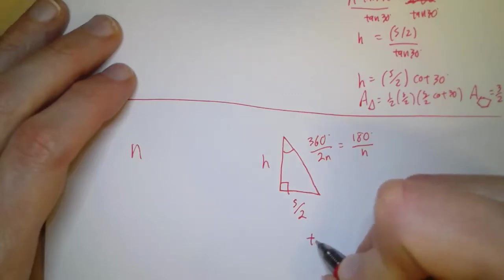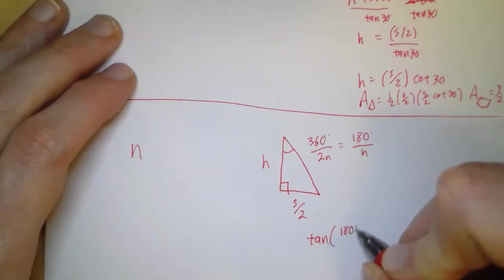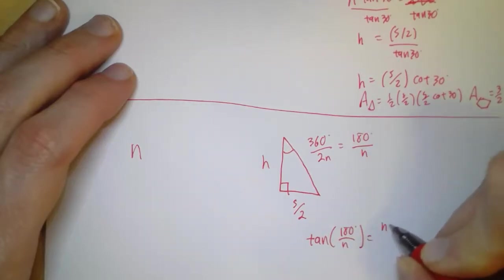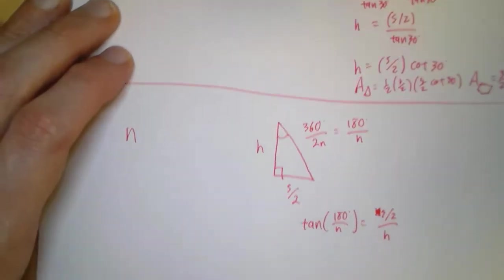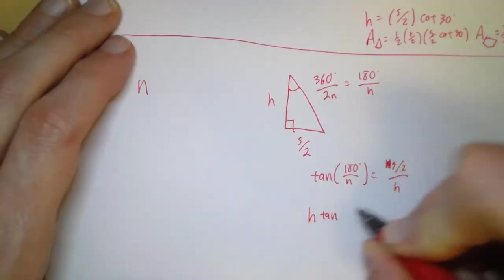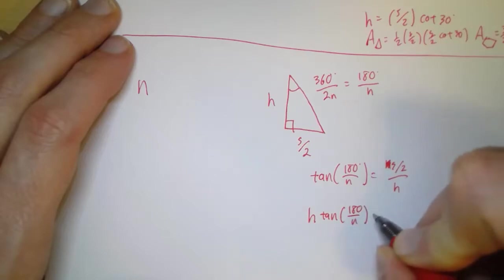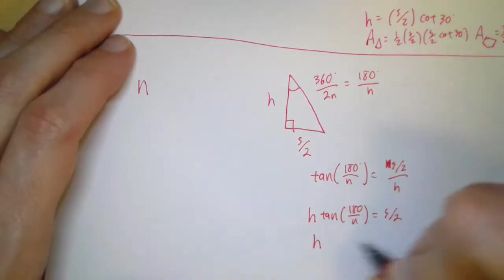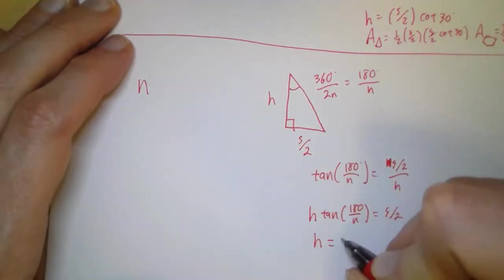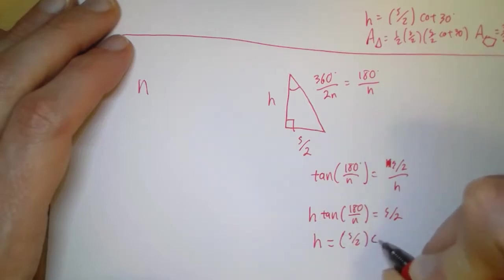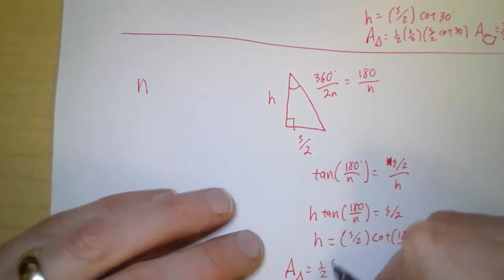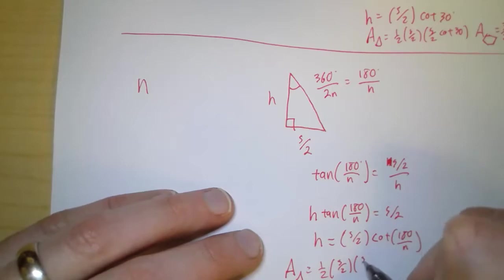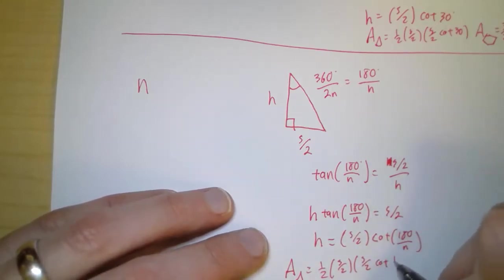So when we solve this, we write tangent of 180 degrees over n equals s over 2 all over h. Solving, we get h times tangent of 180 over n equals s over 2. Dividing by tangent is the same as multiplying by cotangent, so h equals s over 2 times cotangent of 180 over n.